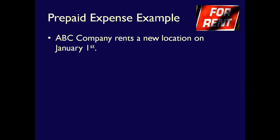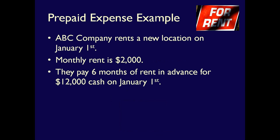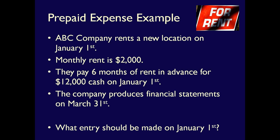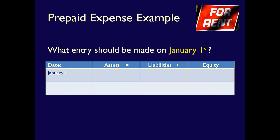ABC Company rents a new location on January 1st. The rent is $2,000 per month and they pay six months of rent in advance — six times $2,000 means they've spent $12,000 cash on January 1st. The company has to report to the public quarterly, which means they produce financial statements on March 31st. Whenever we look at a transaction, we need to ask ourselves: what did we give up? What did we get, if anything? What did we use or consume? What did we earn? What do we owe? The first two questions are key, and the last three help clarify our thinking.